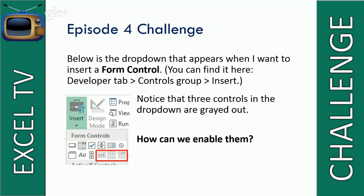Let's jump to Episode 4's challenge. Below, we have a drop-down that appears from the Developer tab — this is if you want to insert form controls. You can find it on the Developer tab if you go to the Controls group and click Insert. As you'll notice here, in this highlighted red area, there are three gray items. They're grayed out because they're disabled — you can't insert them into your spreadsheet. So the question is: how do we enable them? What can we do to insert them into our spreadsheet?